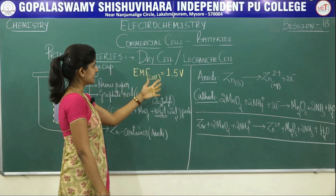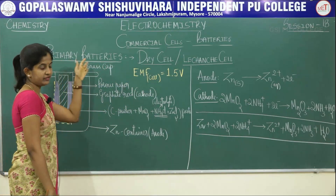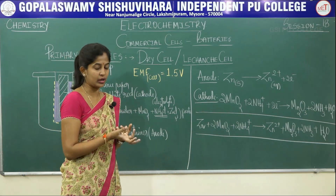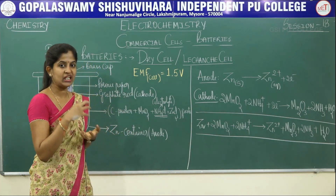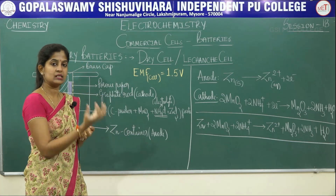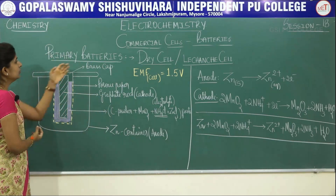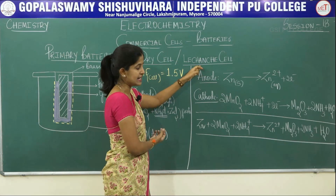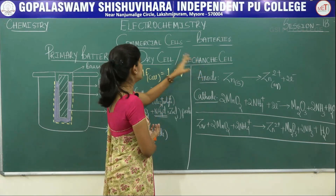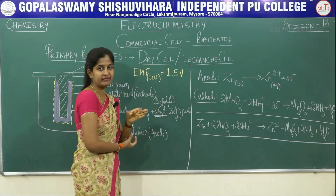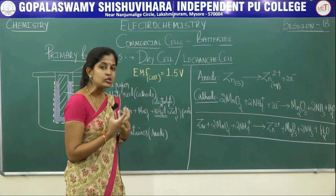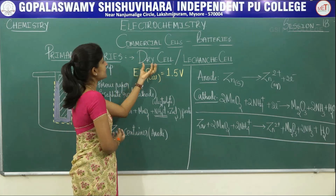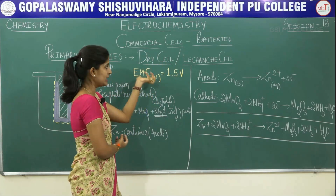Now we will look at the dry cell, also called the Leclanché cell — named after the scientist who discovered this primary battery. It is called a 'dry' cell because it does not have a liquid electrolyte inside; it has a semi-solid electrolyte inside instead.